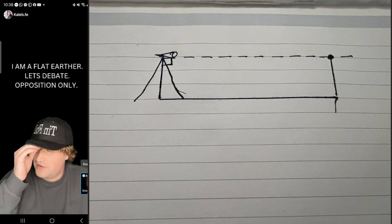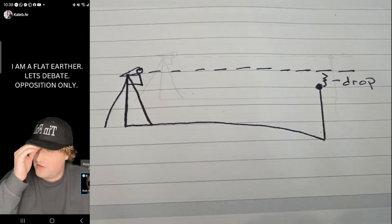one is a telescope that is set up horizontal at that point, and the other is a target at the exact same height as the telescope. The horizontal caused by the first object would intersect the second object on the other side of the lake.